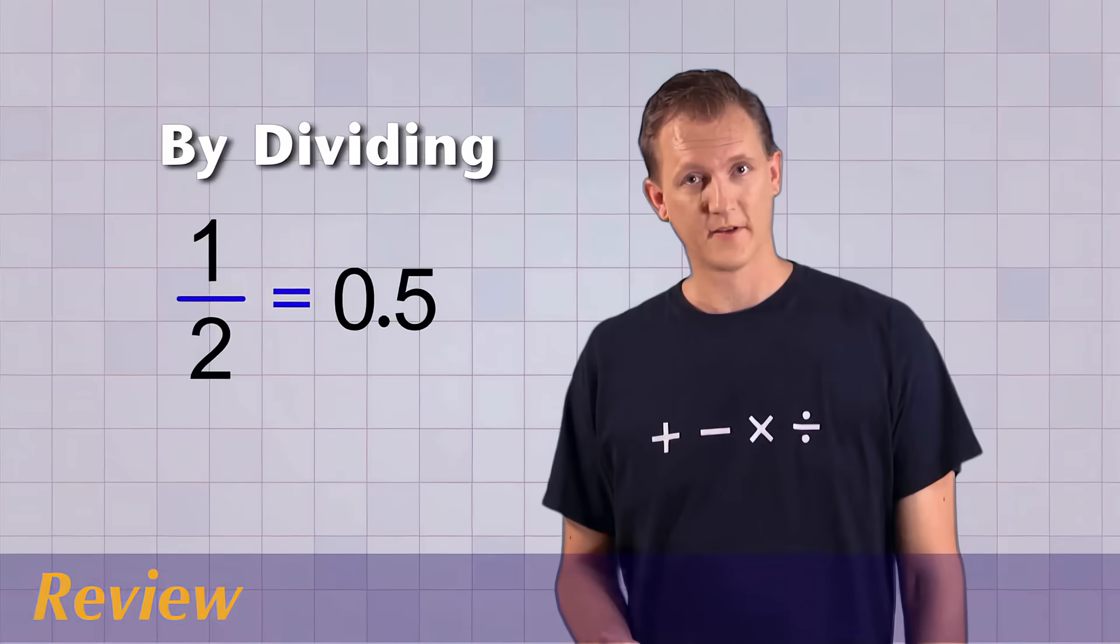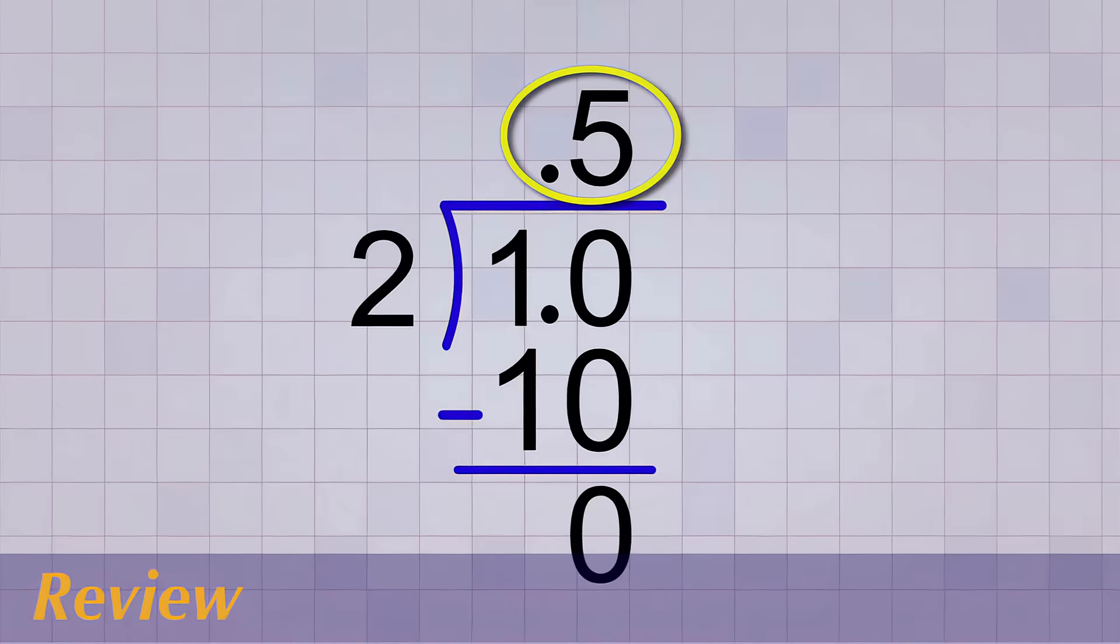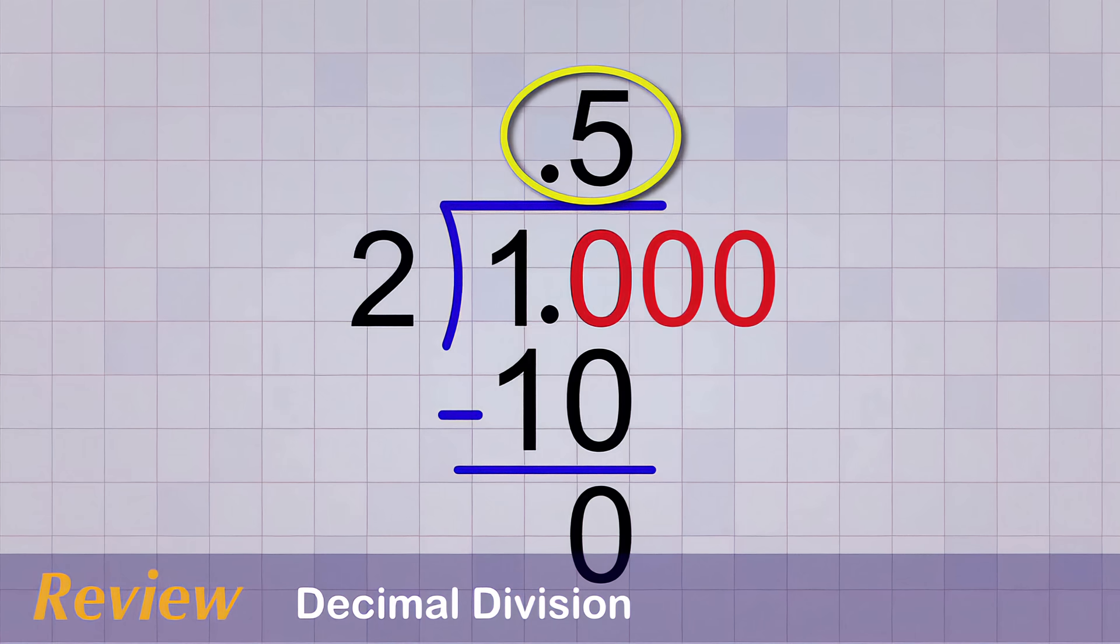To convert any fraction to a decimal number, all you have to do is divide the top number by the bottom number. Usually when you divide a fraction, you'll need to do decimal division. By using the decimal point, you can keep writing zeros in the decimal number places and continue dividing until you have no remainder.